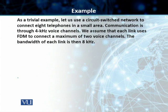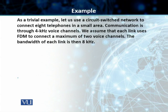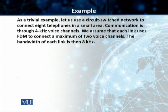As an example, consider a circuit switch network used to connect telephone lines. We have eight telephones in a small area, and analog signal communication uses four kilohertz voice channels. Each link uses frequency division multiplexing to connect a maximum of two voice channels, so the bandwidth of each link is eight kilohertz.